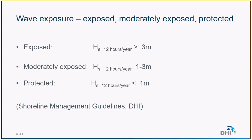At DHI we define three types of coasts based on the significant wave height exceeded 12 hours per year. When it's higher than three meters, we classify the coast as exposed. When it's between one and three meters, it's moderately exposed. And when it's below one meter, it's defined as protected.